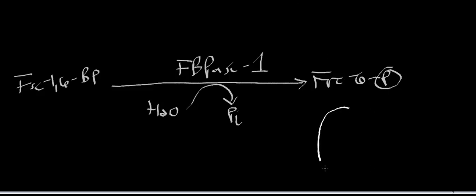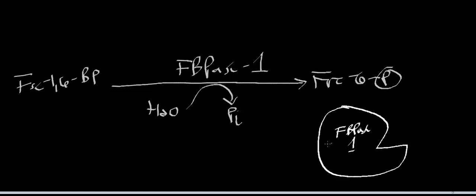So normally, we have fructose bisphosphatase 1, and essentially here's the allosteric site for fructose 2,6-bisphosphate. Now, remember — what did fructose 2,6-bisphosphate do? Well, it activated glycolysis, and I always mention that it inhibited gluconeogenesis. But right now we're going to find out why it inhibits gluconeogenesis.